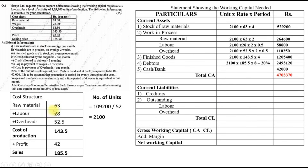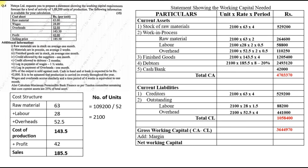Current Liabilities — Creditors (raw material, one month): 2,100 × 63 × 4 = 5,29,200. Outstanding wages (lag one and a half weeks): 2,100 × 28 × 1.5 = 88,200. Outstanding overheads (lag one month = four weeks): 2,100 × 52.5 × 4 = 4,41,000. Total Current Liabilities = 10,58,400. Net Working Capital = 47,03,370 − 10,58,400 = 36,44,970. There is no margin of safety, so gross working capital equals net working capital.